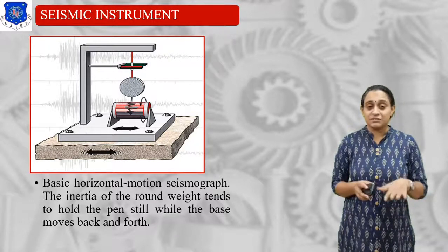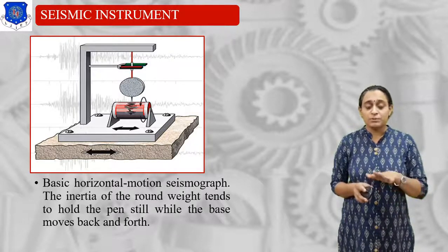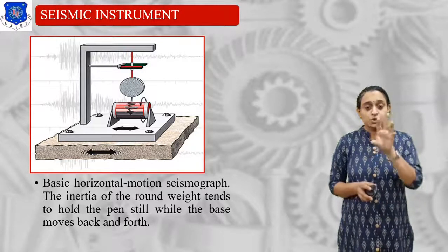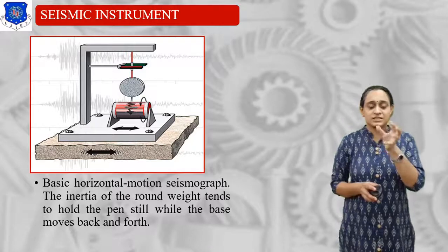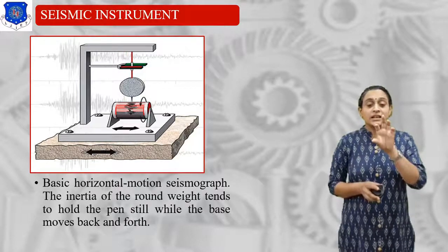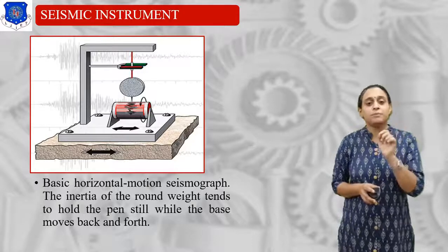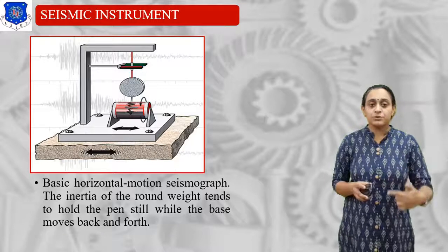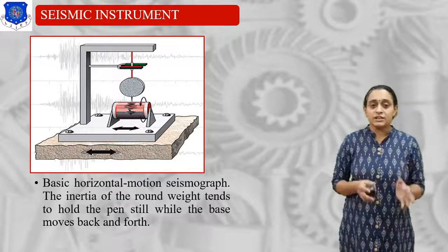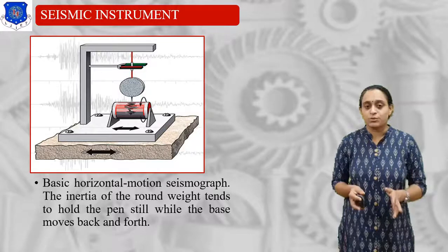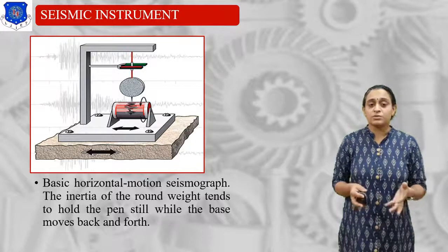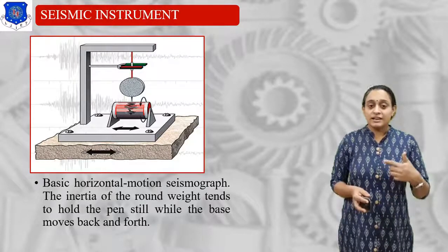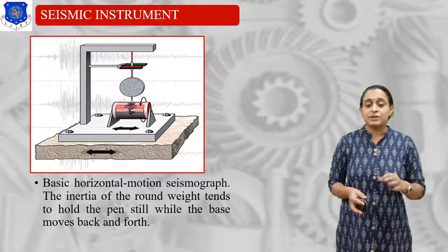When the earth surface vibrates or moves to and fro, it gives motion to the dial which is at the very middle of the portion. The dial consists of a pan, and that pan will mark on the roller. Basically, the horizontal motion of a seismograph, which comes from the inertia of the round weight, tends to pull the pan and it will measure the vibration of the system.